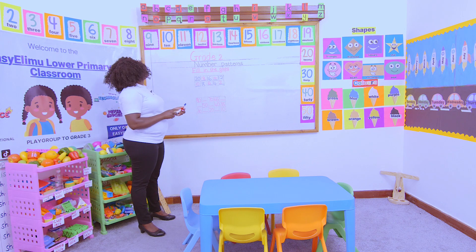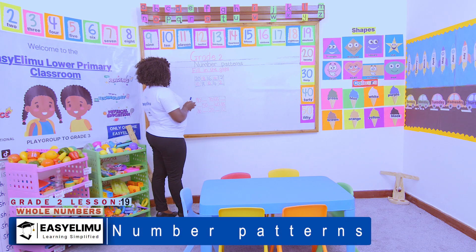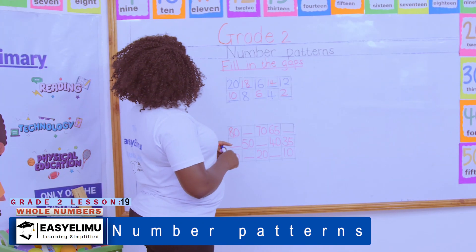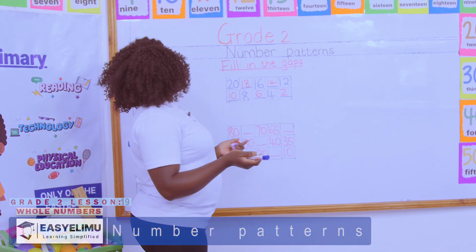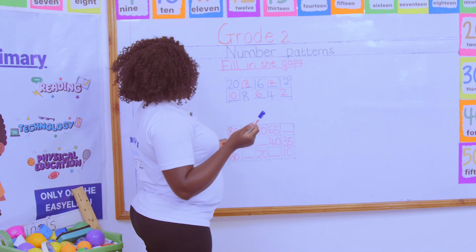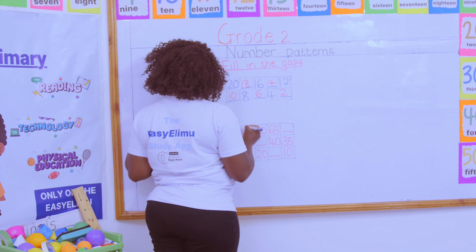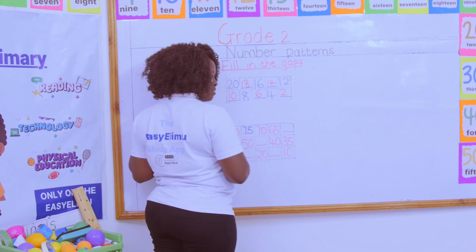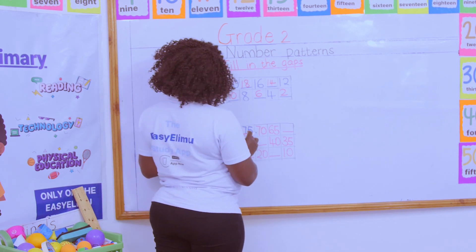Good. Now we are on another one where they say fill in the missing numbers. What is the rule again? What will help us understand this pattern? They all end with a 5 and a 0. So what number are we using here? We are reducing by 5. So 80 reduced by 5, you get 75.